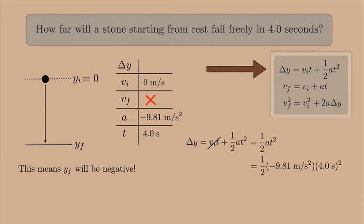One half times a, that's negative 9.81 meters per second squared. Times t squared, that's 4 seconds squared.